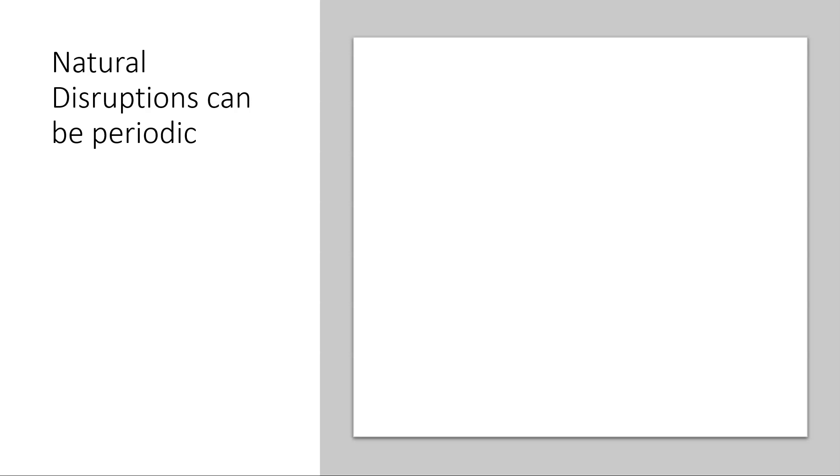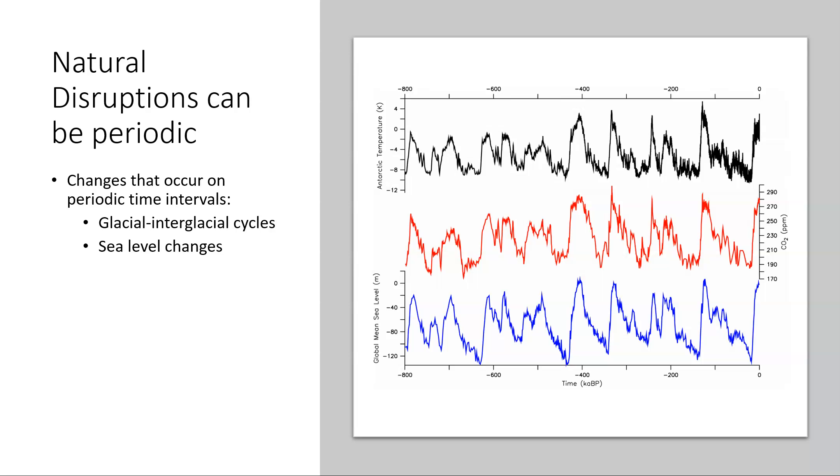We're going to differentiate between periodic natural disruptions, episodic natural disruptions, and totally random ones. Periodic disruptions occur on periodic time intervals. Glacial and interglacial cycles, at least for the past million years or so, have followed a fairly periodic regular pattern. Along with that, changes in sea level have occurred on a very similar pattern. The graph you see off to the right shows temperatures over time, with high points being our interglacial periods and low points being our ice ages.